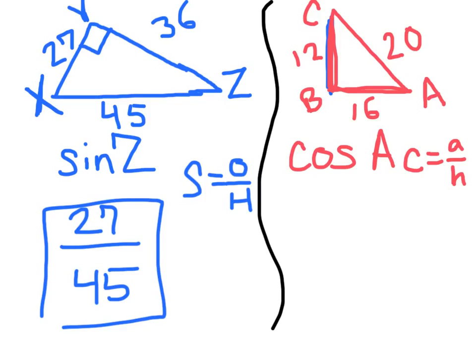And looking at angle A, our adjacent line is going to be 16. So 16. And the hypotenuse is what is across from the right angle, which is 20. So 16 over 20.